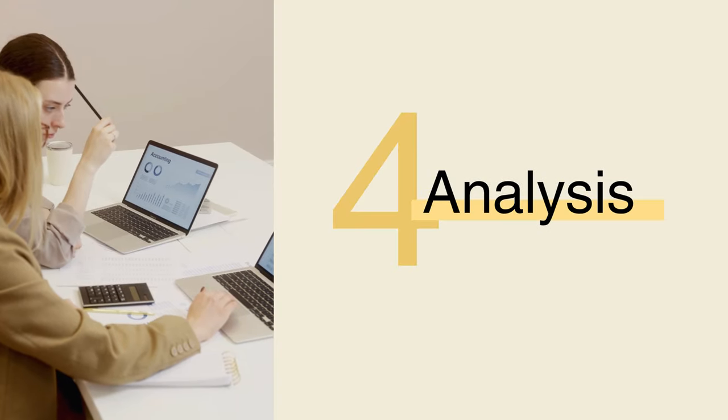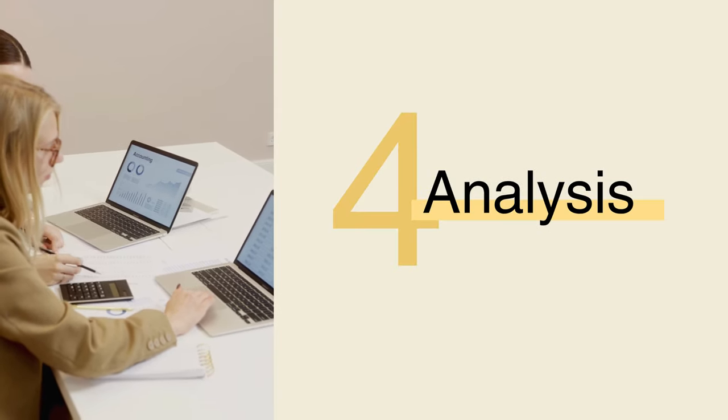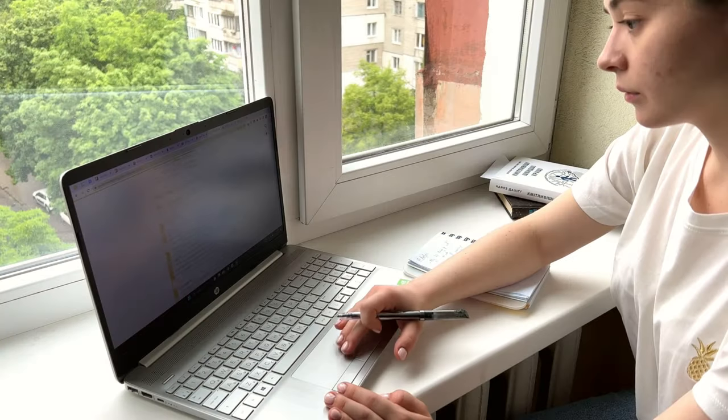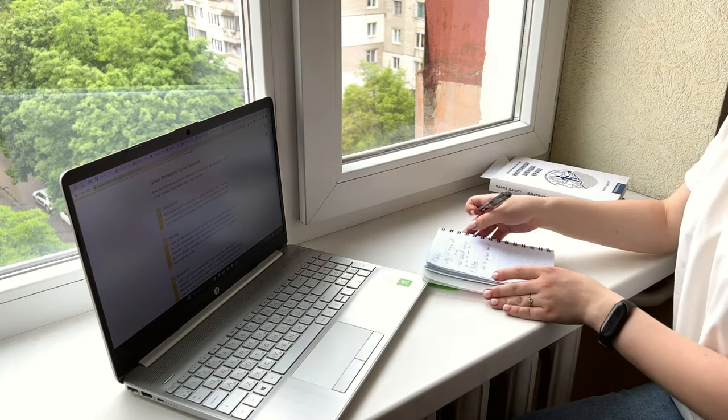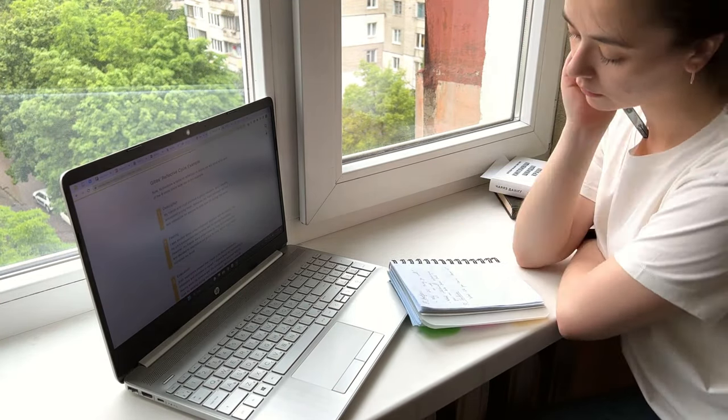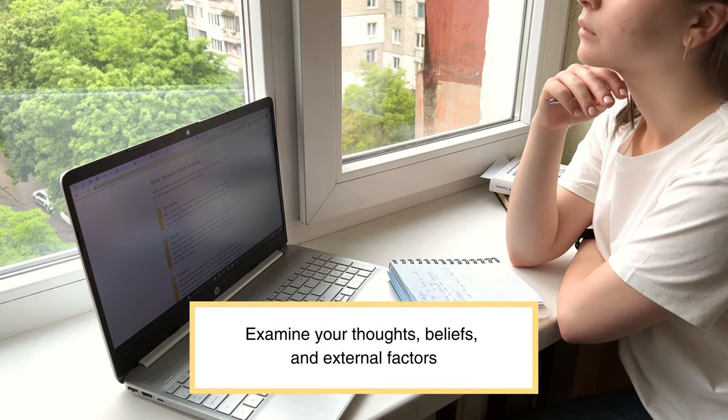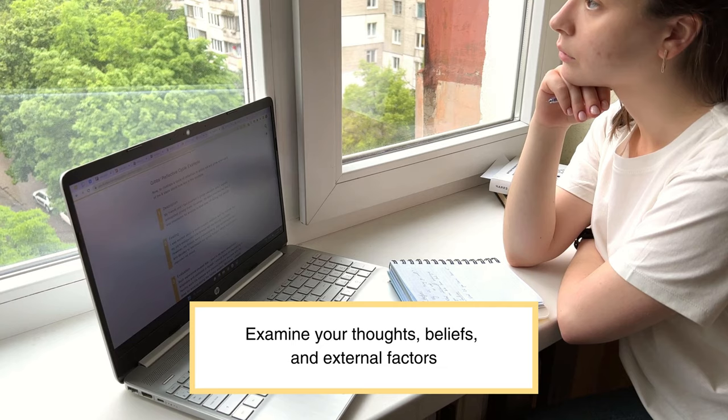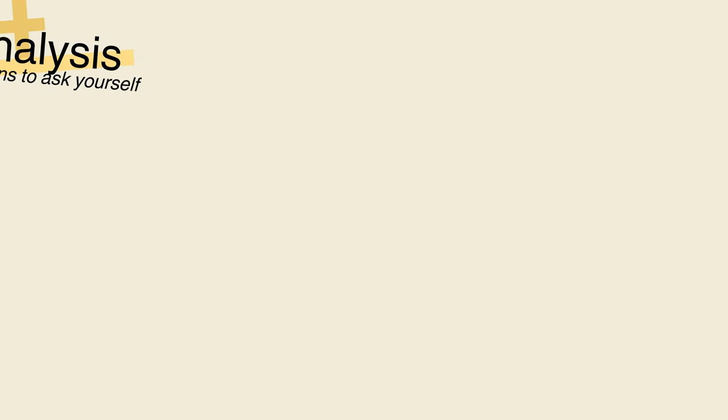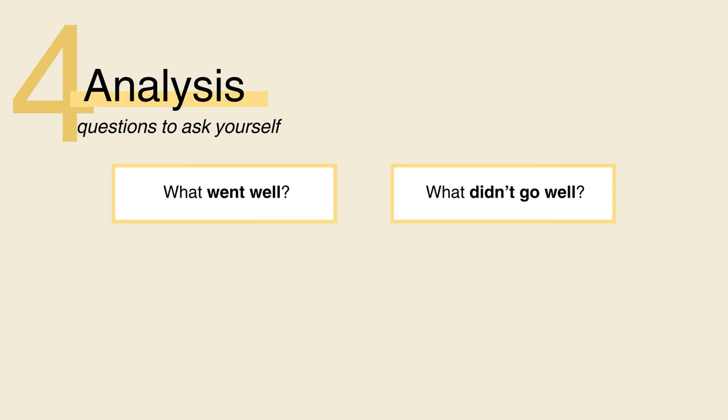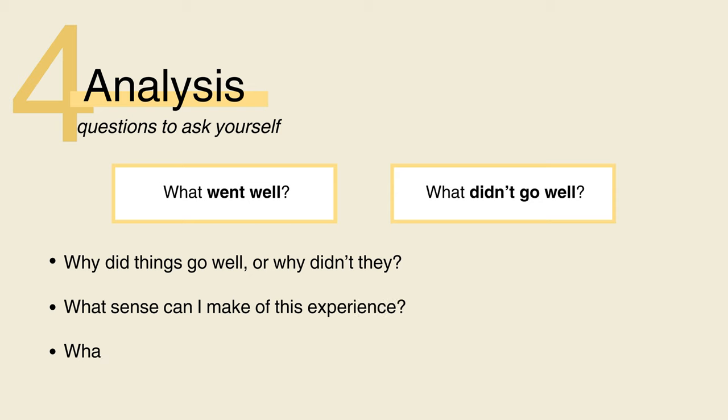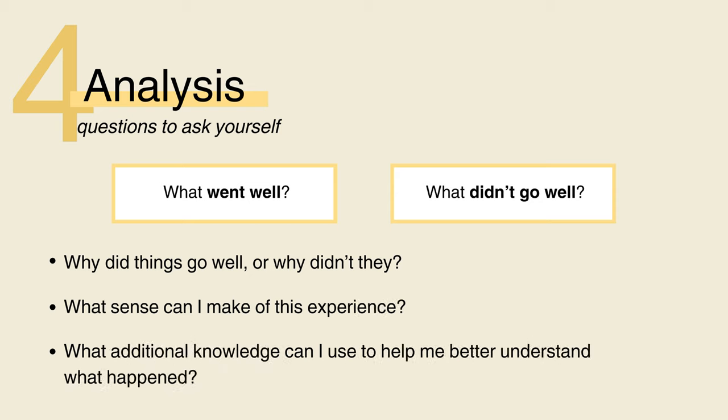Now, it's time for analysis. This is one of the most critical steps of the model. This stage focuses on exploring the underlying factors and influences contributing to the situation. You need to examine your thoughts, beliefs, and external factors to gain insights into the dynamics. Separate what went well and what did not and question why. Why did things go well? Or why didn't they? What sense can I make of this experience? What additional knowledge can I use to help me better understand what happened?